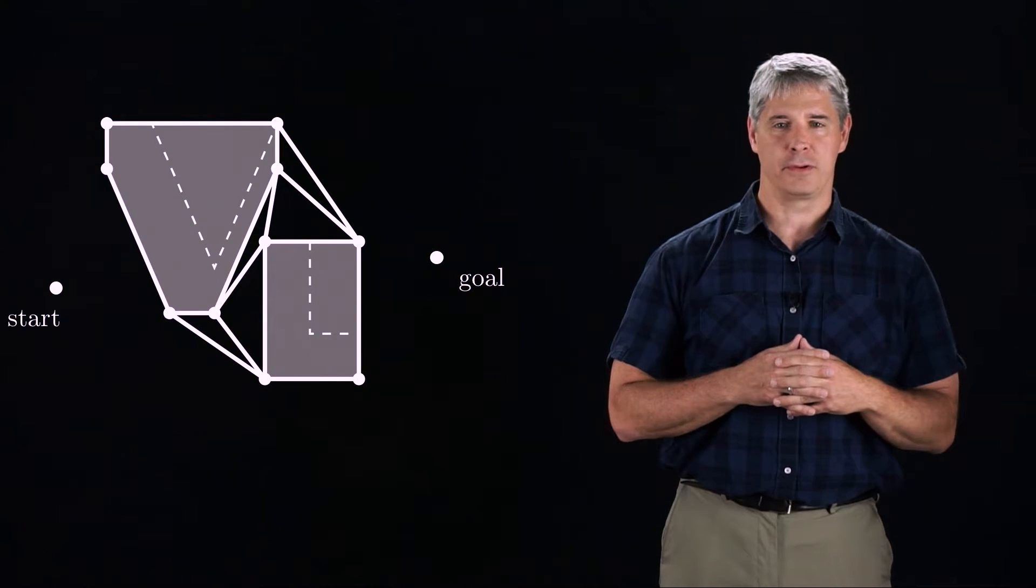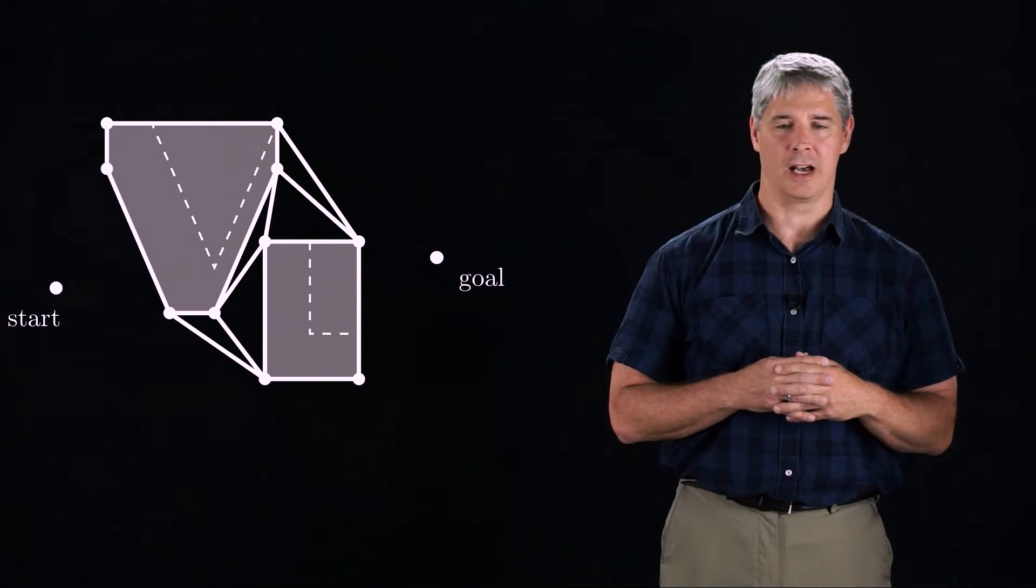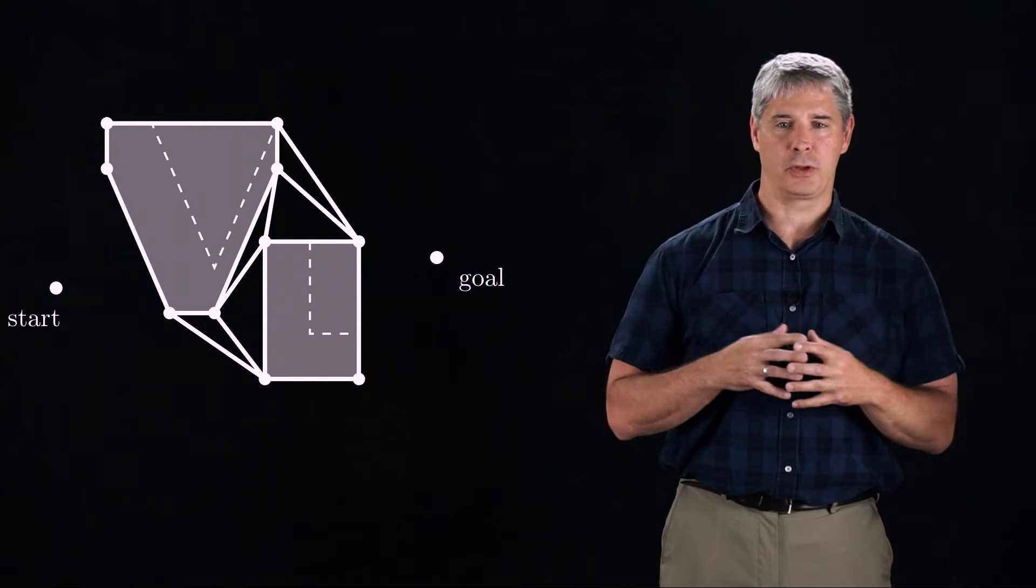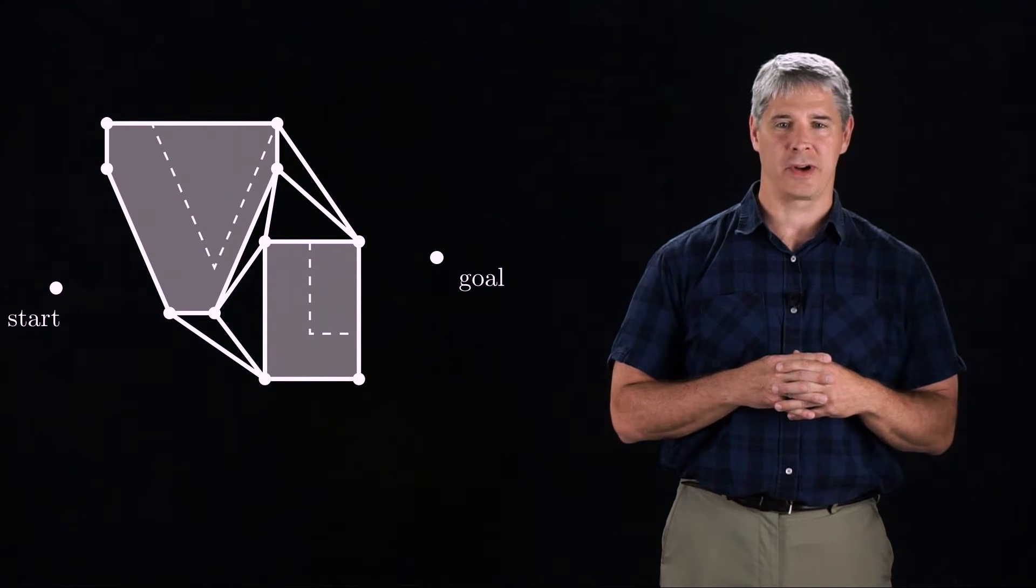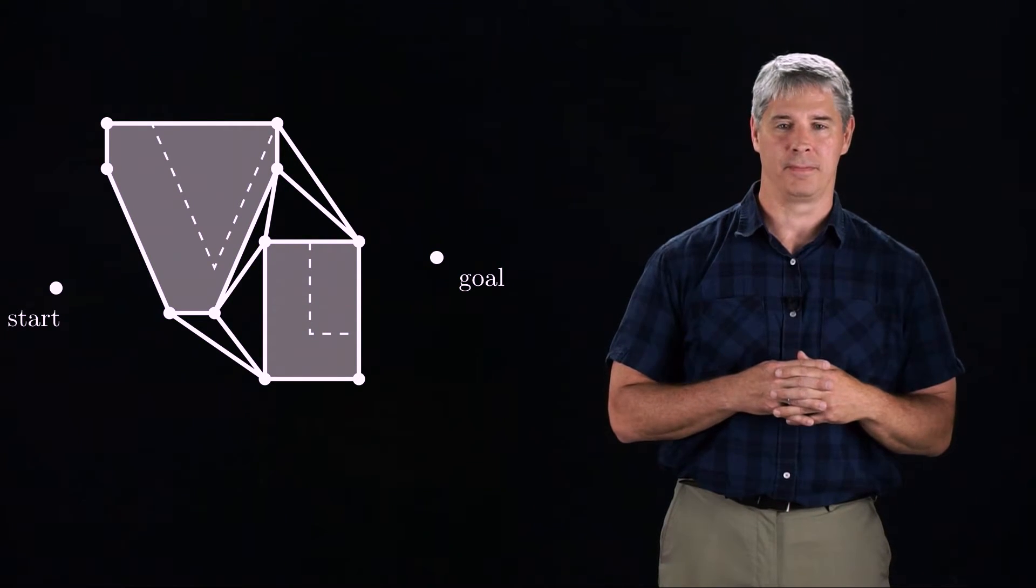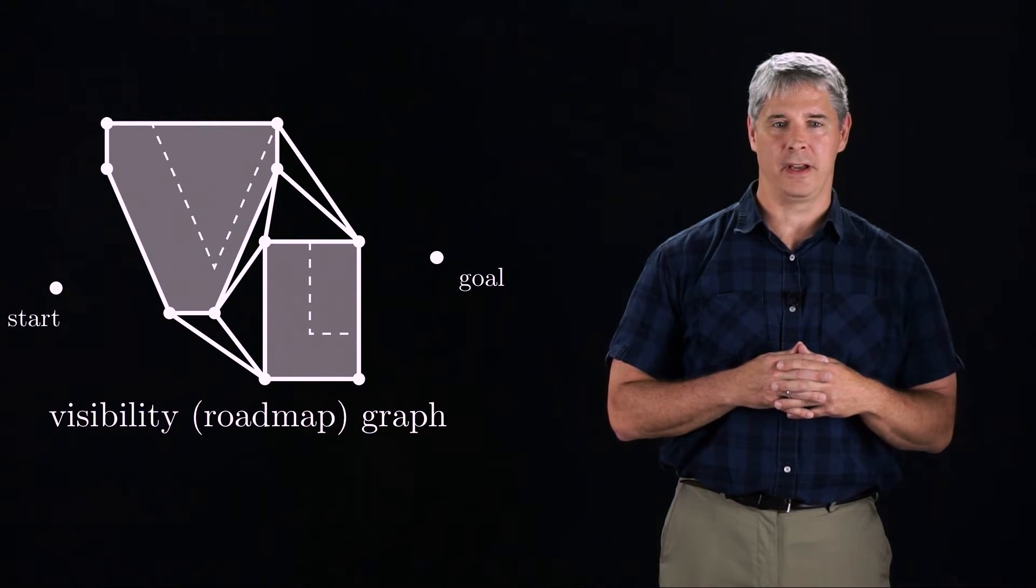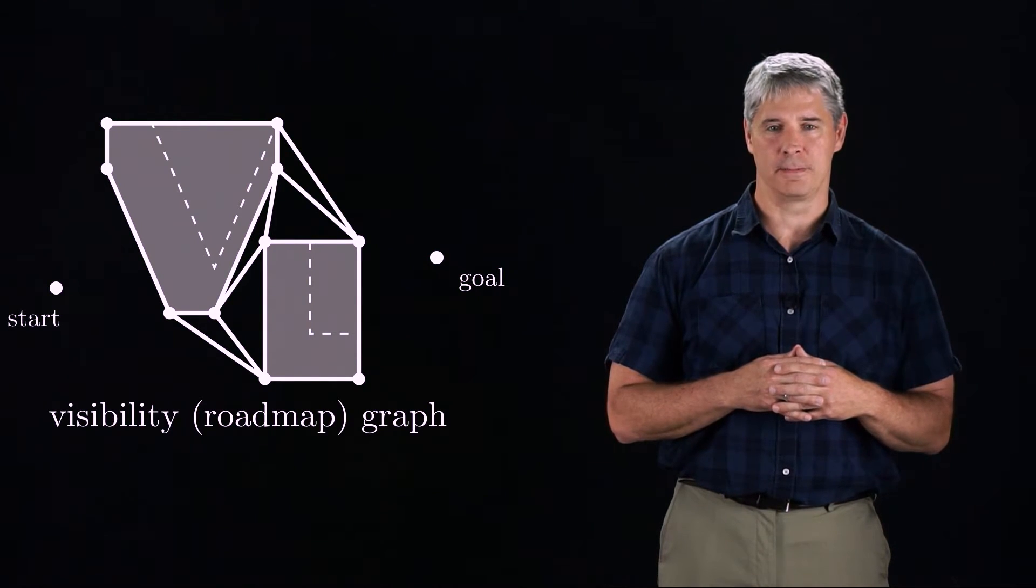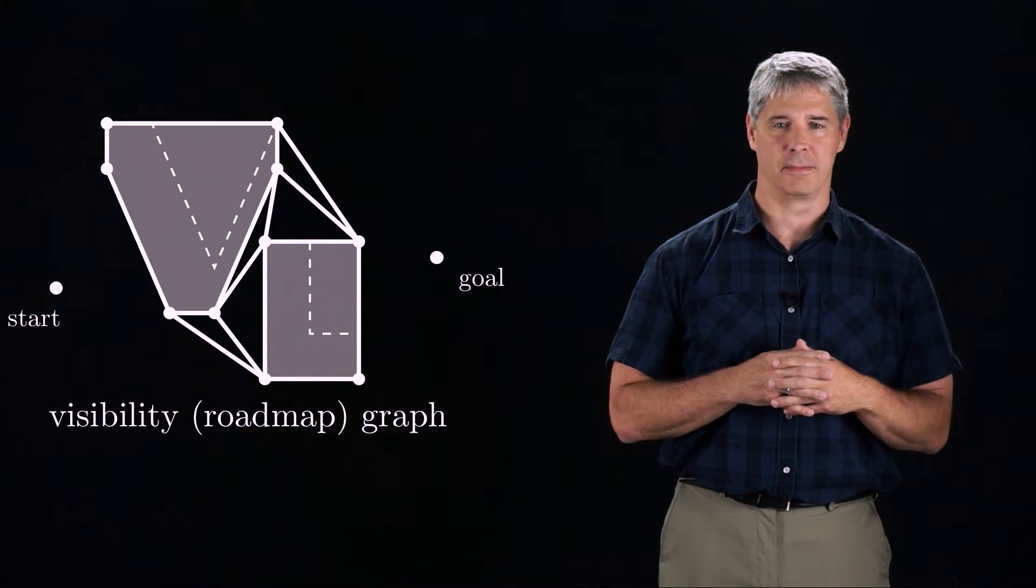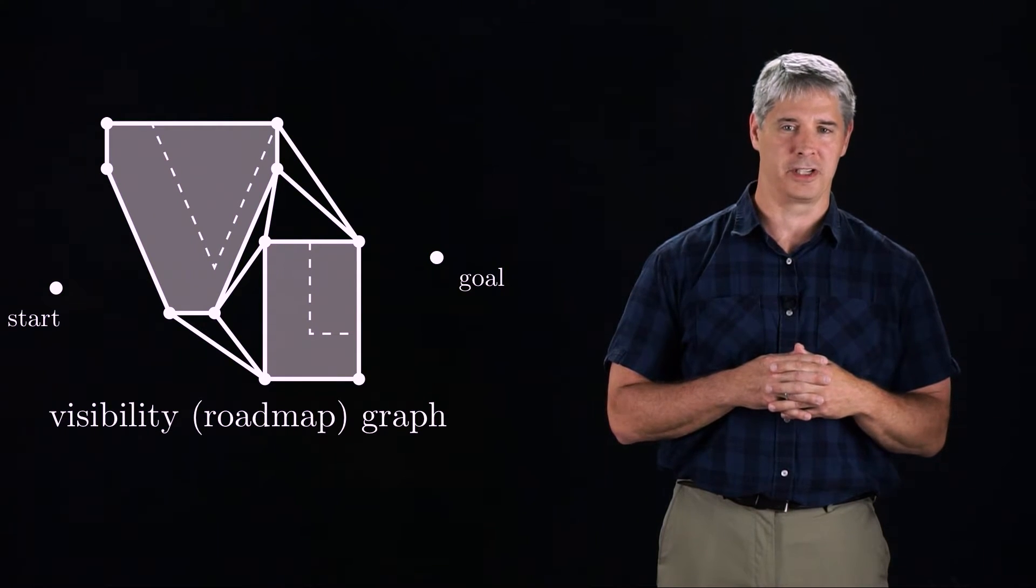Next, we construct a graph whose nodes are the corners of the C-space obstacles. Edges are between nodes that can see each other by a straight line that does not go through an obstacle. This graph is called a visibility graph, and it is also a roadmap of the free C-space, since any free configuration can be connected to it by a straight line in free space.